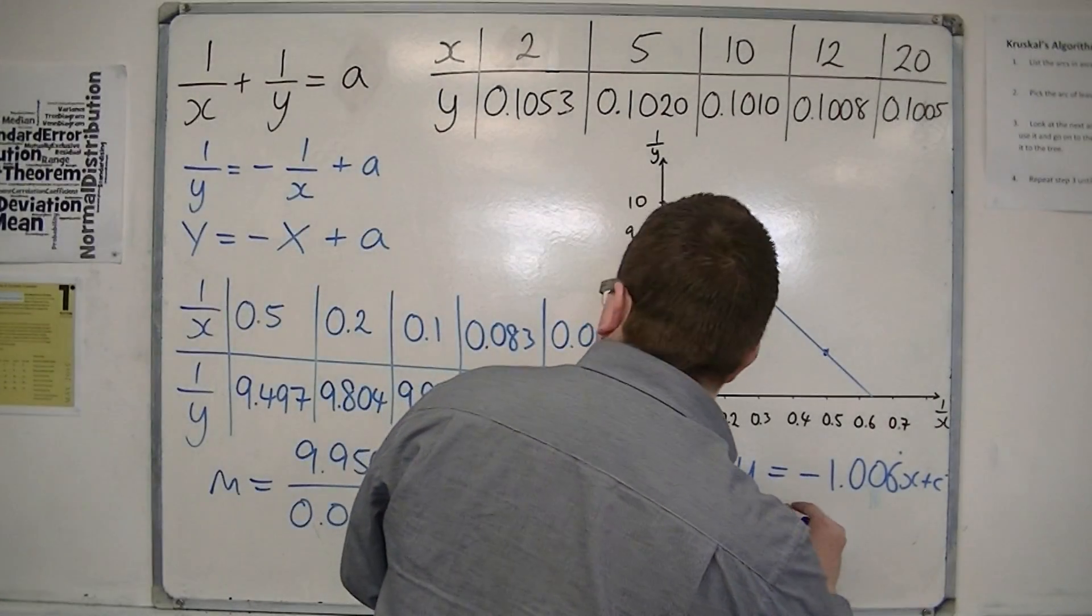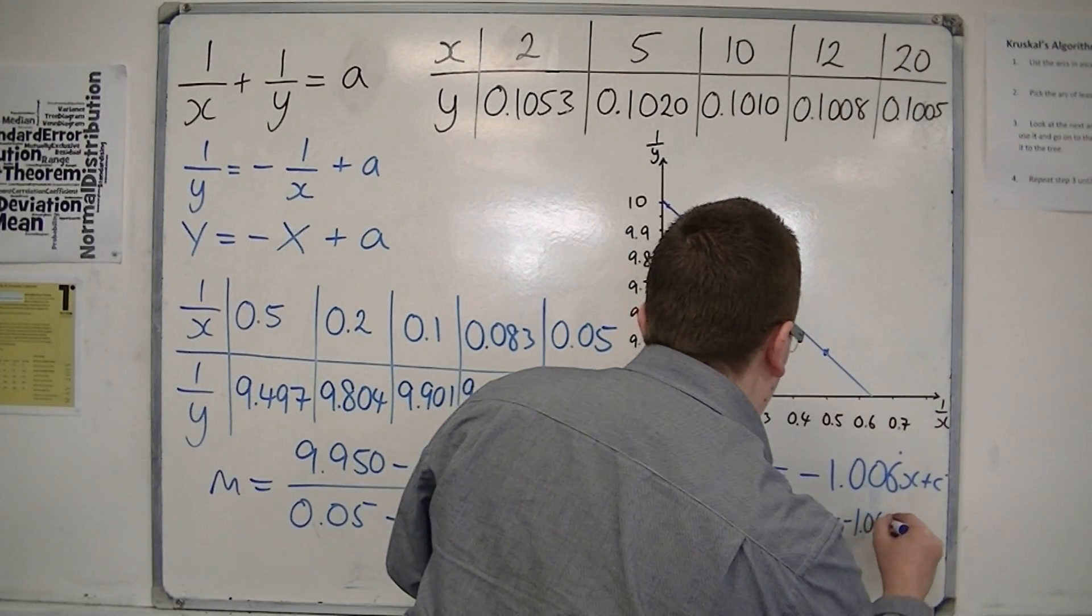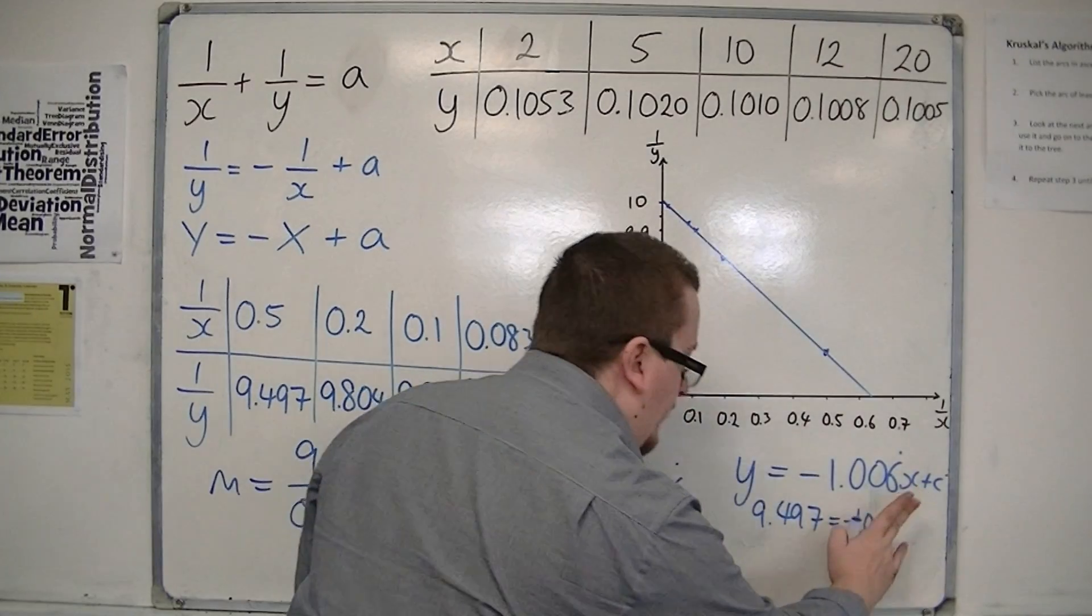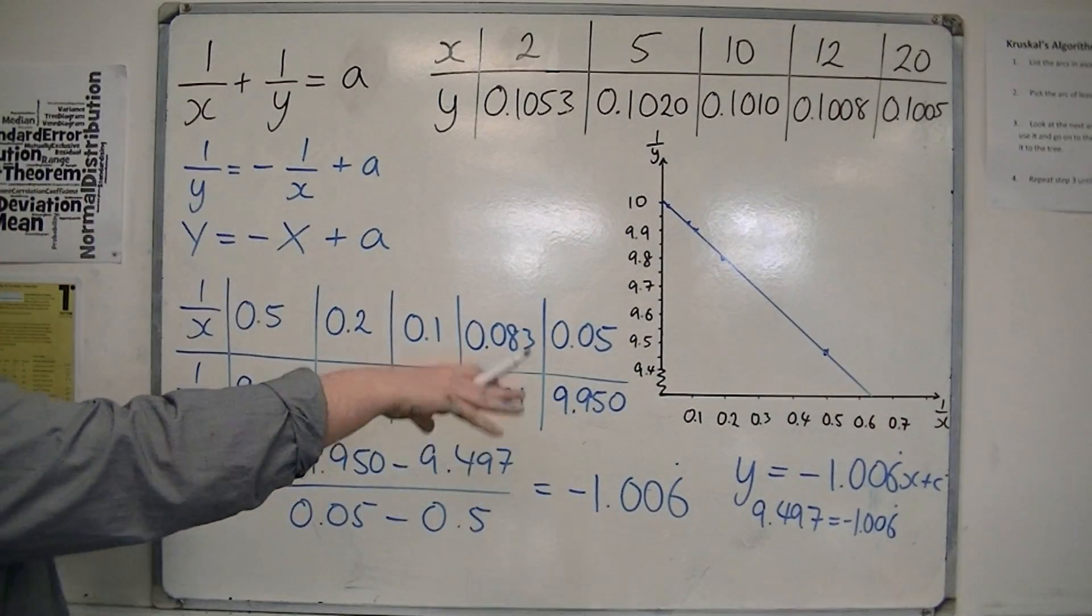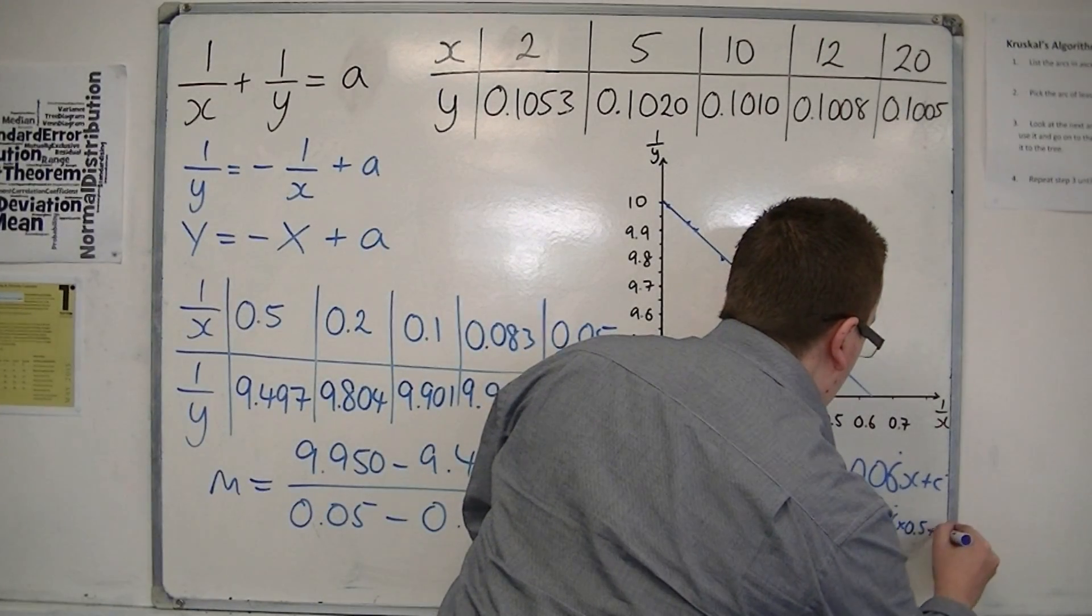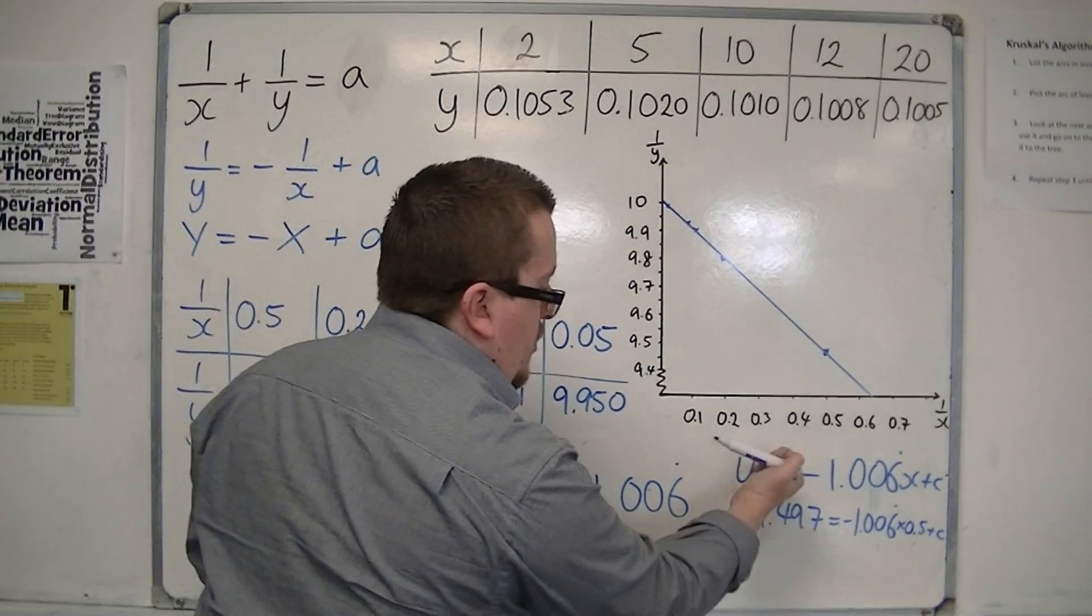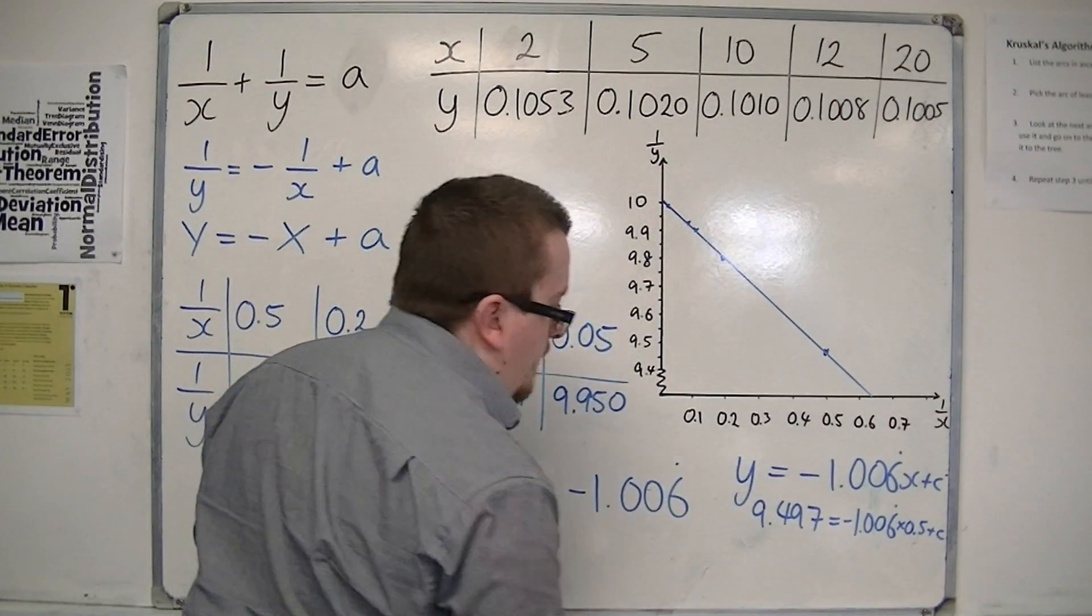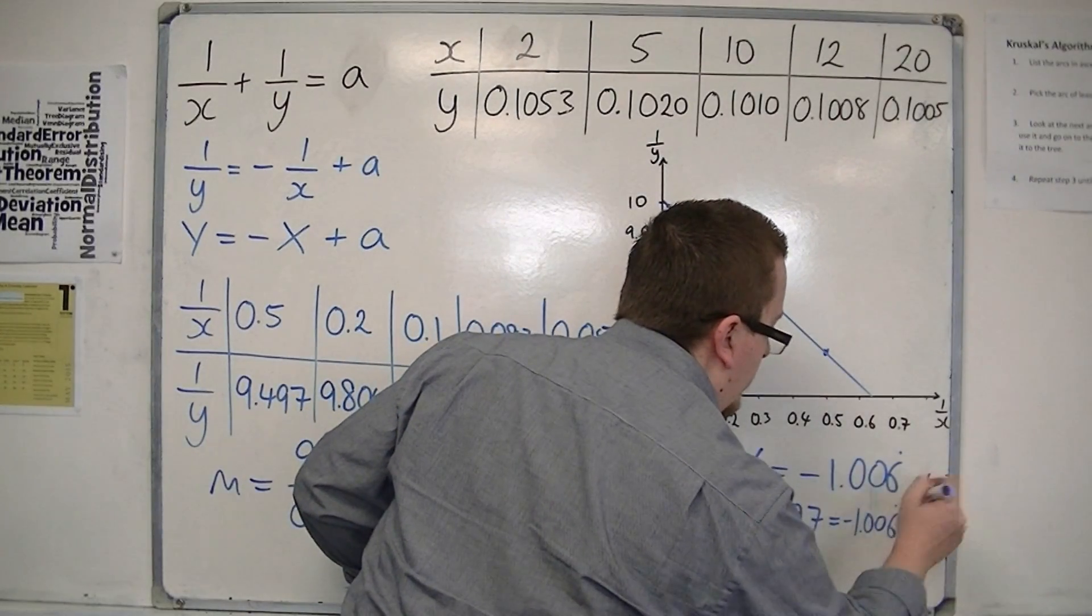So we'd have 9.497 is equal to minus 1.006 recurring times the 0.5 plus c. Really, I should have 1 over y and 1 over x here. I'll replace them with capitals, I think. Easiest way to do it.